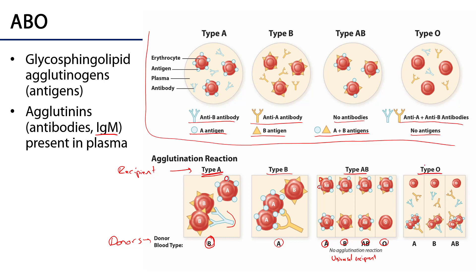Type O, as you recall, has no surface antigens but has both anti-A and anti-B antibodies in the plasma. As a result, if type O receives blood from type A, type B, or type AB, there will be agglutination. The only donor that type O is compatible with is another type O. Yet because type O has no surface antigens, it can donate to type A, type B, type AB, and type O — which is why we refer to type O blood as the universal donor.